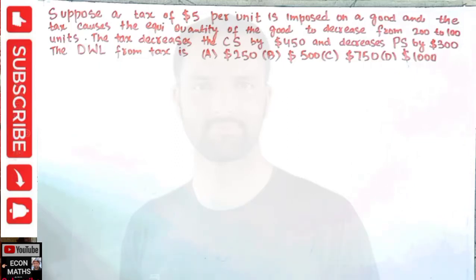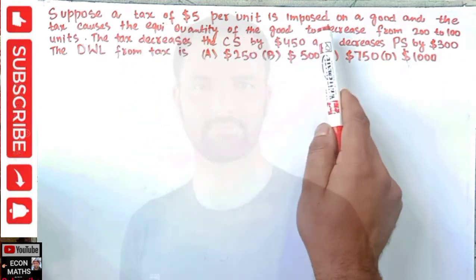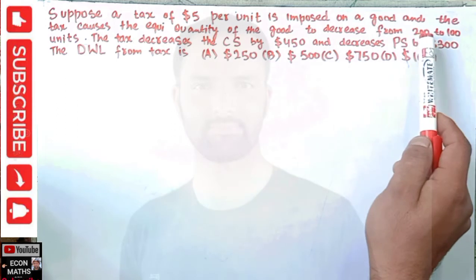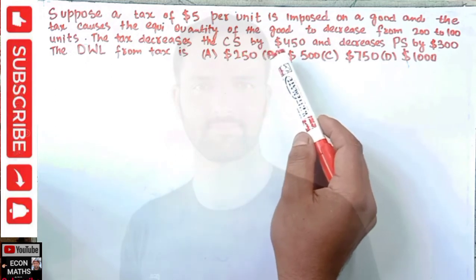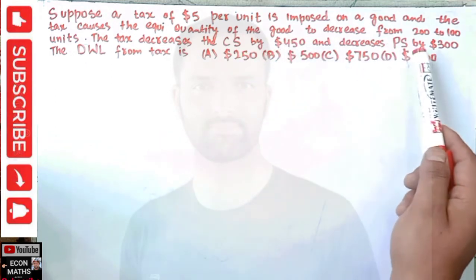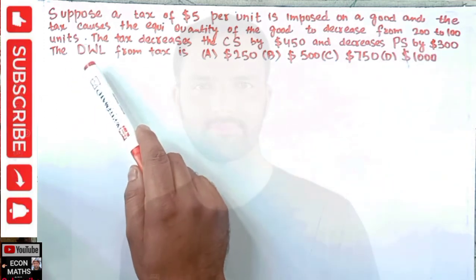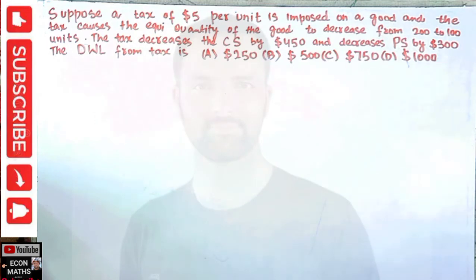Hi, this is Halal. In this video on the mathematical economics series, we will try to solve a problem on dead weight loss. The question was asked by a brother on the Telegram channel. Suppose a tax of five dollars per unit is imposed on a good, and the tax causes the equilibrium quantity to decrease from 200 to 100 units. The tax decreases consumer surplus by $450 and producer surplus by $300. We have to find the dead weight loss. The options are $250, $500, $750, or $1000.